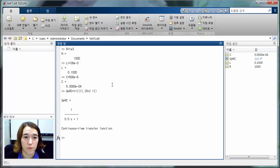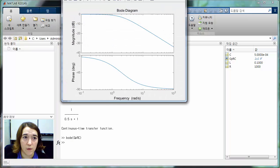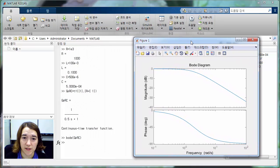If we press Enter here, we should see our system come up here and we can check that it's correct. Now to plot the Bode plot, all we have to do is put Bode of R functions, so GP of RC. Press Enter. And we should get our nice Bode plot here.